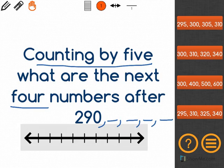I can use a number line to help me skip count. I start at 290, and then I count up by 5 more.